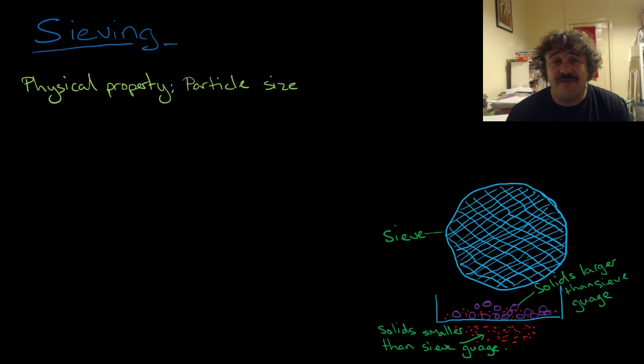So the physical property—remember these are physical separation techniques—the physical property that they're separated based on is size.